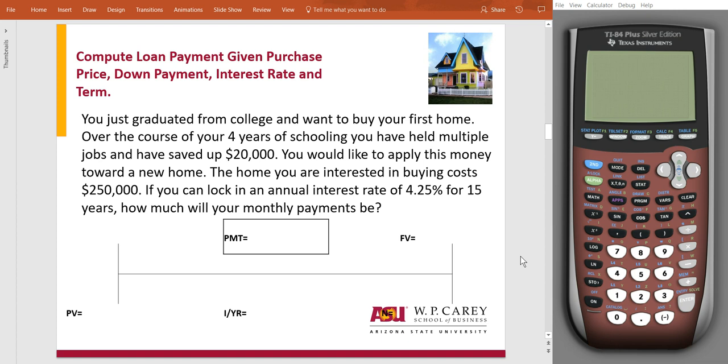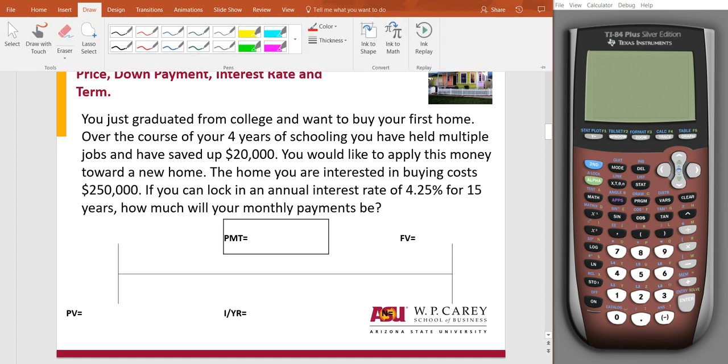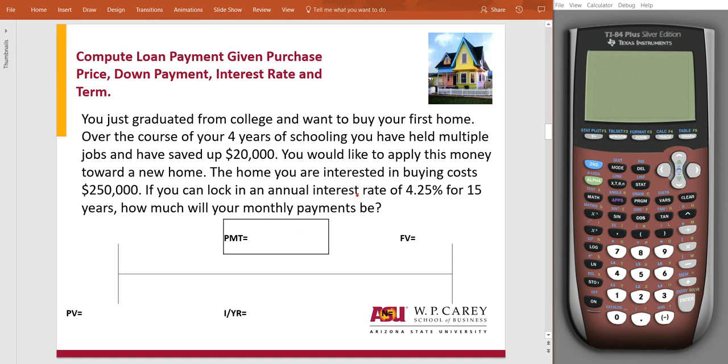Okay, so let me pull out my drawing. Let's just think about this for a second. So you have a house that you're interested in that's $250,000, but you want to apply $20,000 of that right off the bat to help lower your payments.